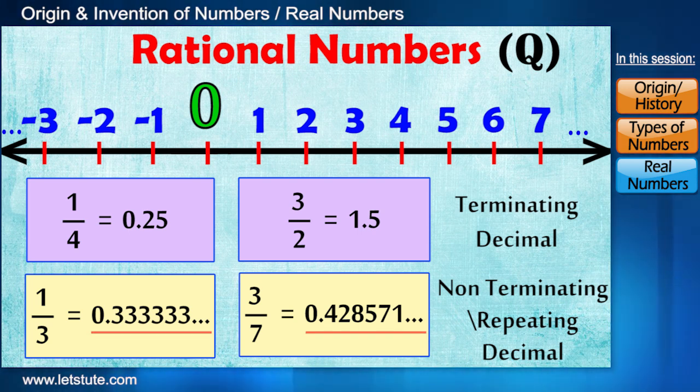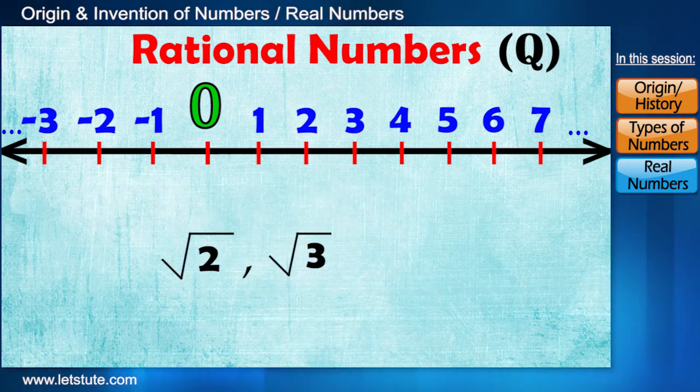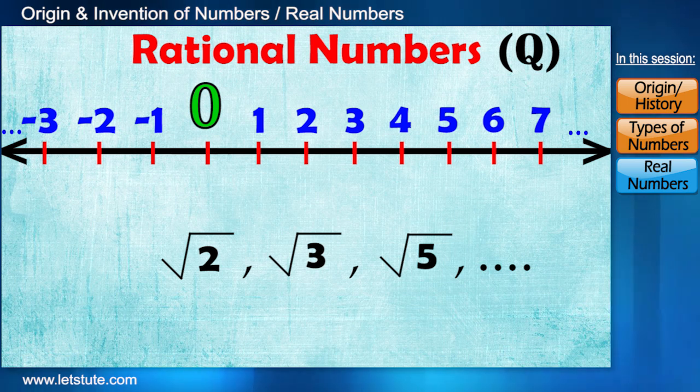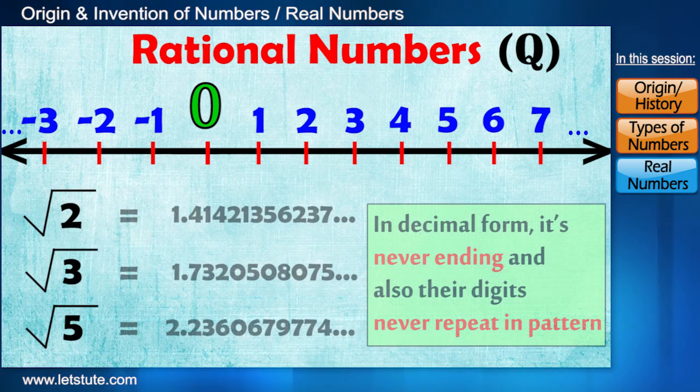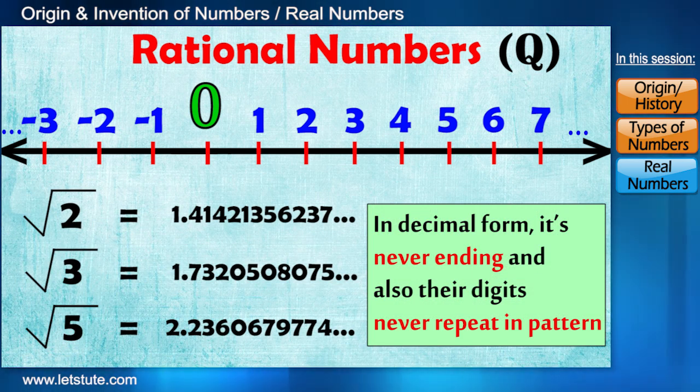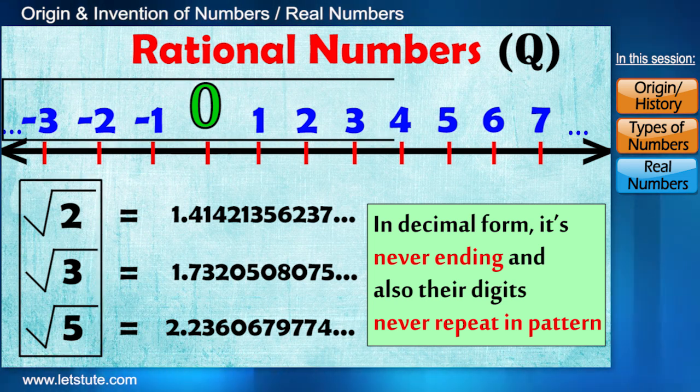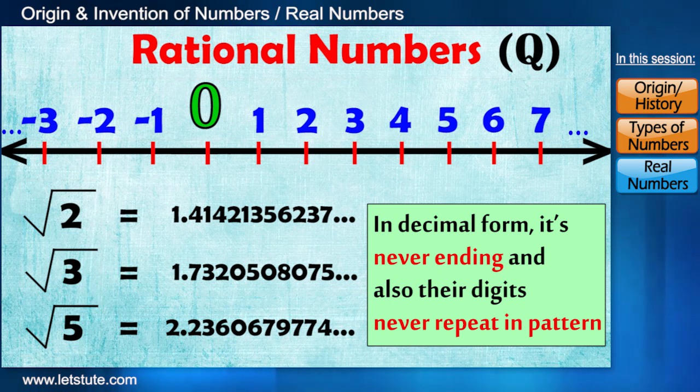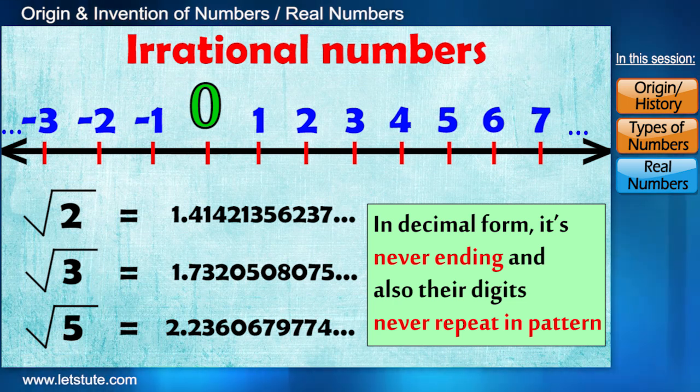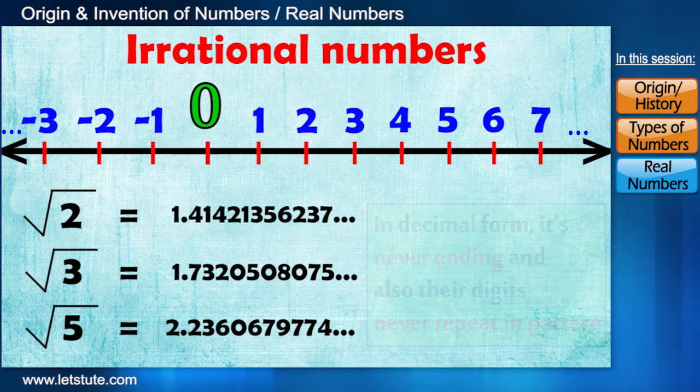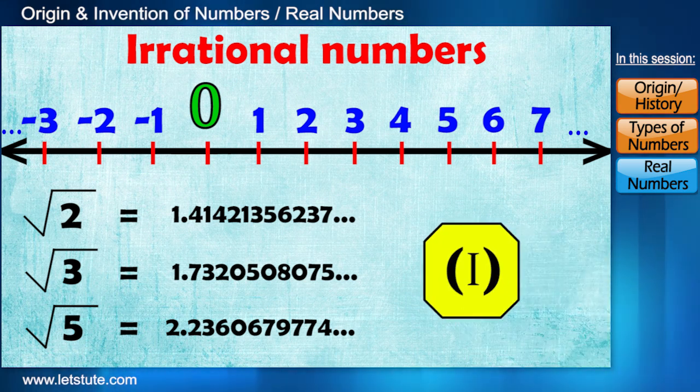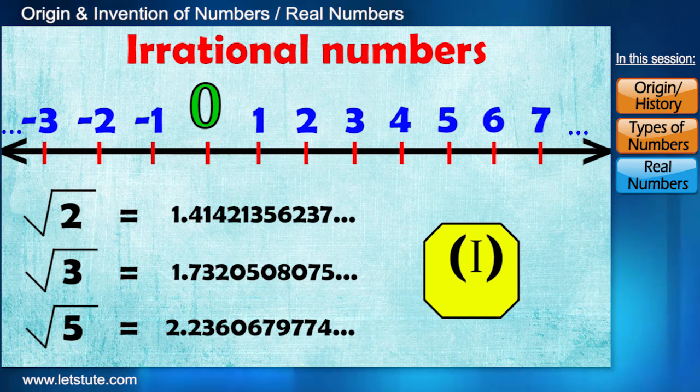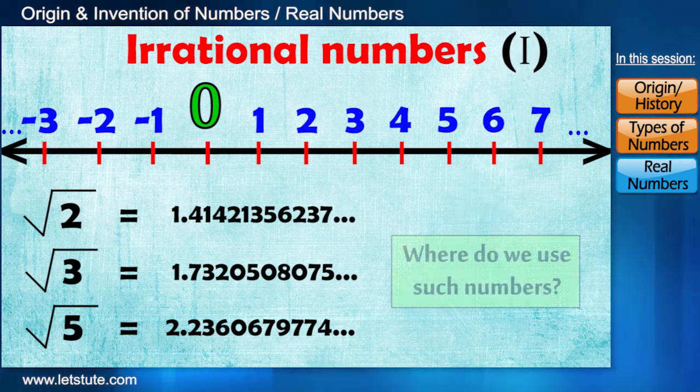There are indeed such numbers. Examples of such numbers are root 2, root 3, root 5, and so on. And if we see its decimal form, it's never ending and also their digits never repeat. These numbers are different from rational numbers and so they are named as irrational numbers. Set of irrational numbers are denoted by the letter I.